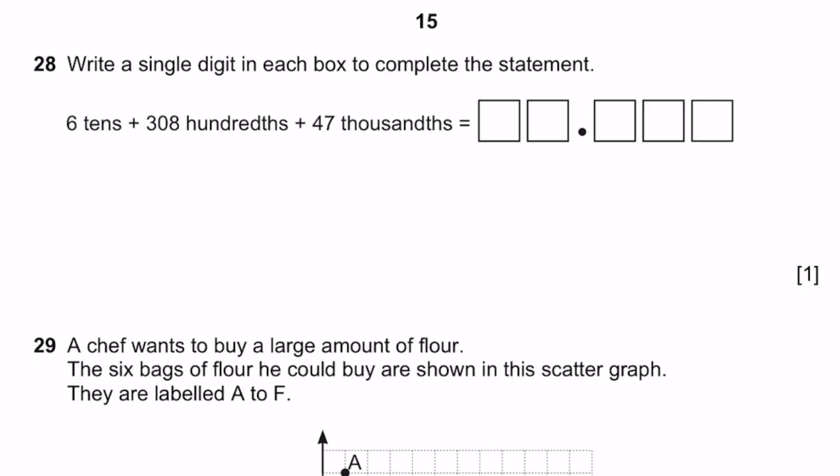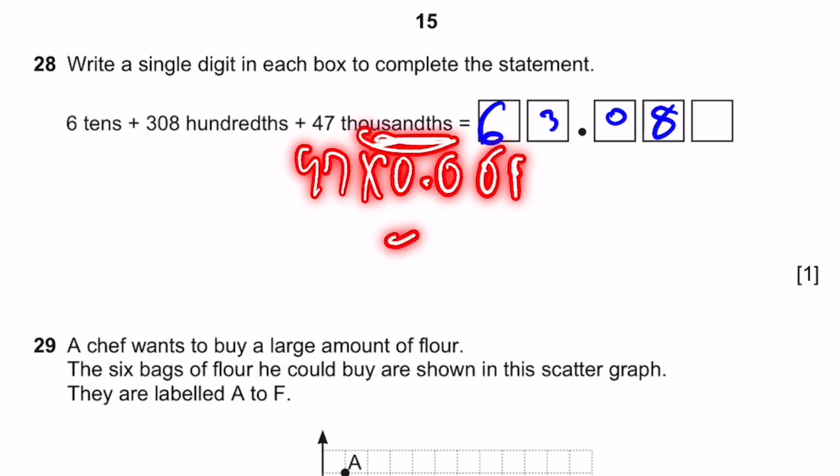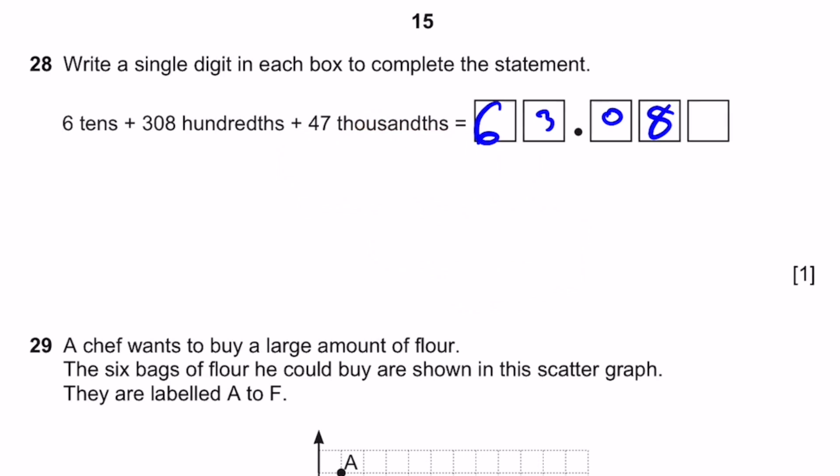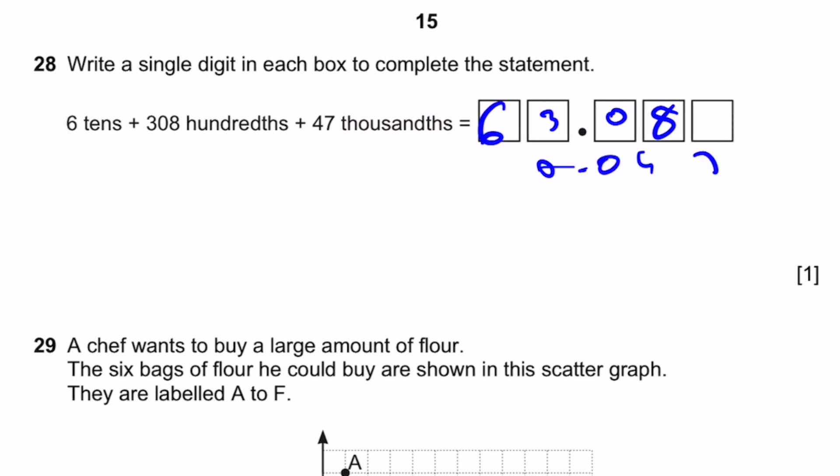Question 28. Write a single digit in each box to complete the statement: 6 tenths plus 300 eight hundredths plus 47 thousandths equals blank. So 6 tenths means there is 6 in the tenths place. 300 eight hundredths means that there is 308 times the hundredths place, which is 0.01. And 308 times 0.01 is 3.08. So we can write this down first, because this is not our final values. We have to add 47 thousandths as well. And 47 thousandths is 47 times 0.001. That's 0.047. Now if we add 0.047 to this, we will get 63.127. And that's why we have to change these digits over here.